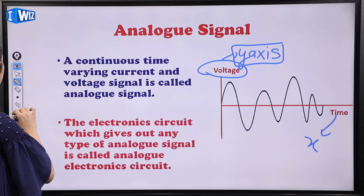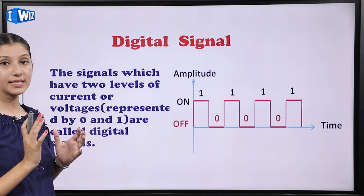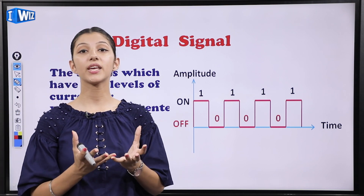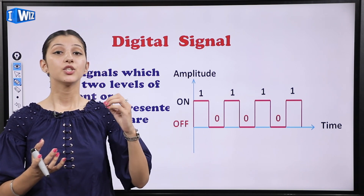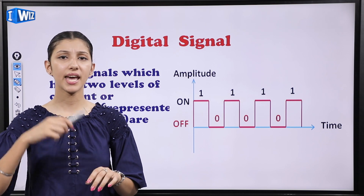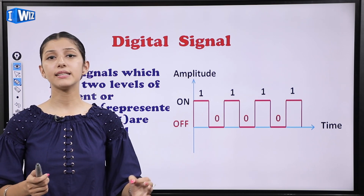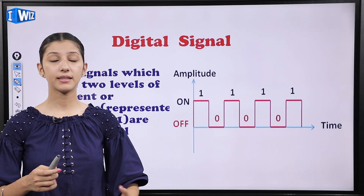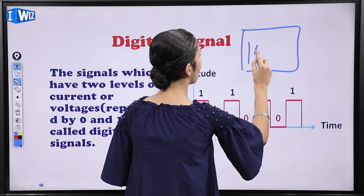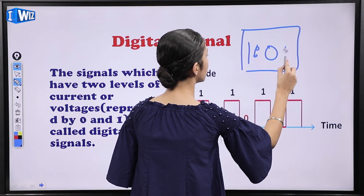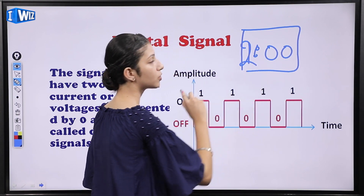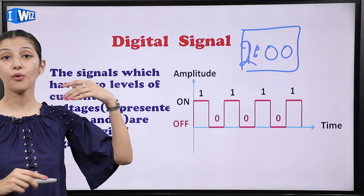Moving on to the next type: digital signals. Basically, ab jo humari saari world hai woh digitalized ho chuki hai. Jo saari signals hain — humari digital watches aa chuki hain. Everything around us — calculators, digital watches — jis mein aise dikhta hai time, like 1:00 or 2:00. Ye kya hain? Digital watches hain.